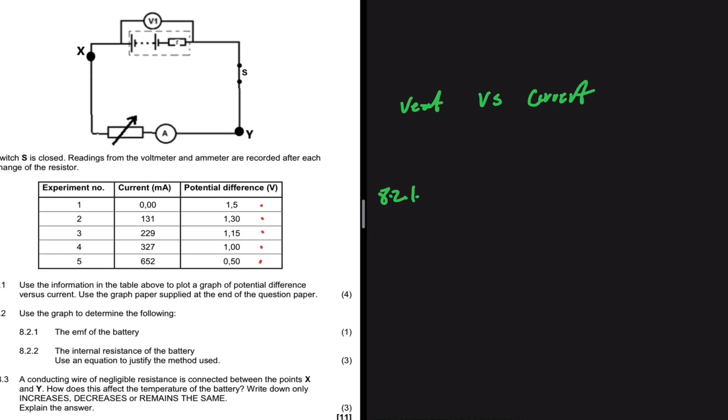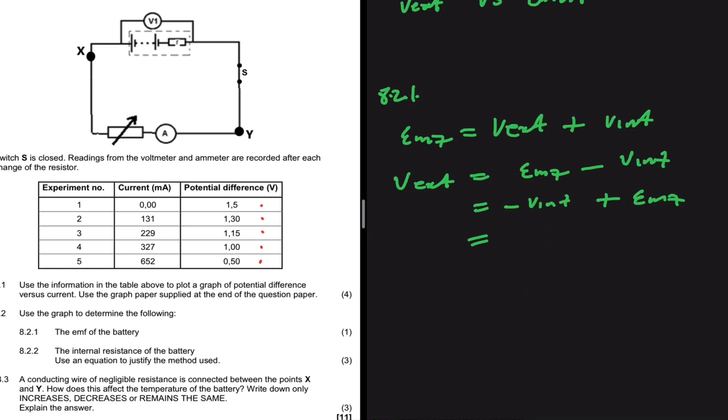The graph is V external versus current, but we know that emf is equal to V external plus V internal. We need V external to be the subject of our formula. So we can say that V external is equal to emf minus V internal, which equals minus V internal plus emf. But we know that V internal equals I multiplied by the internal resistance. So if we substitute that, we're gonna have V external equals minus the current multiplied by the resistance plus emf.